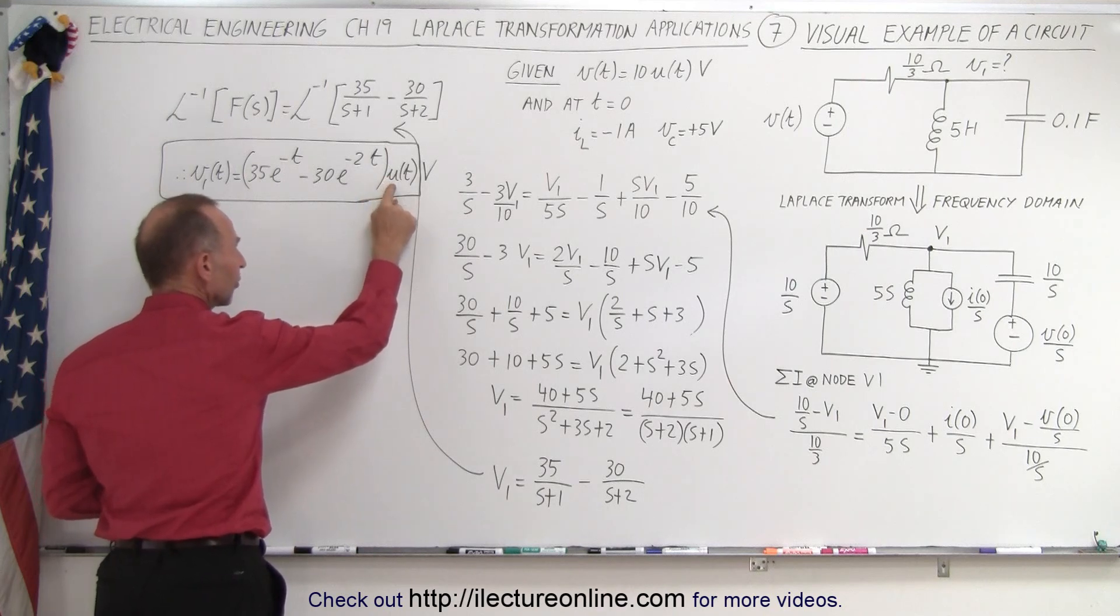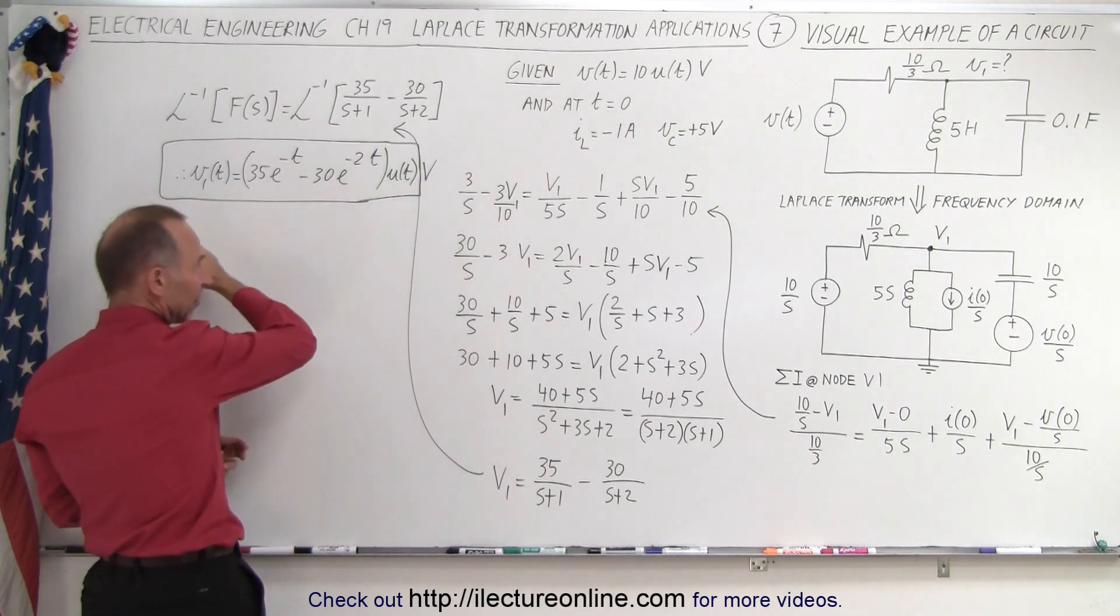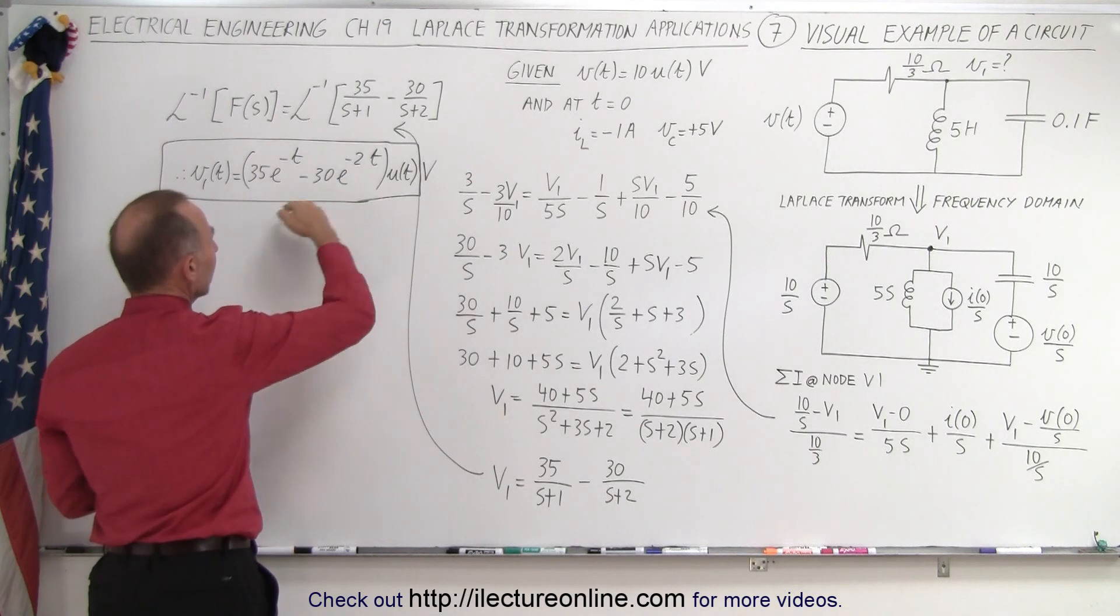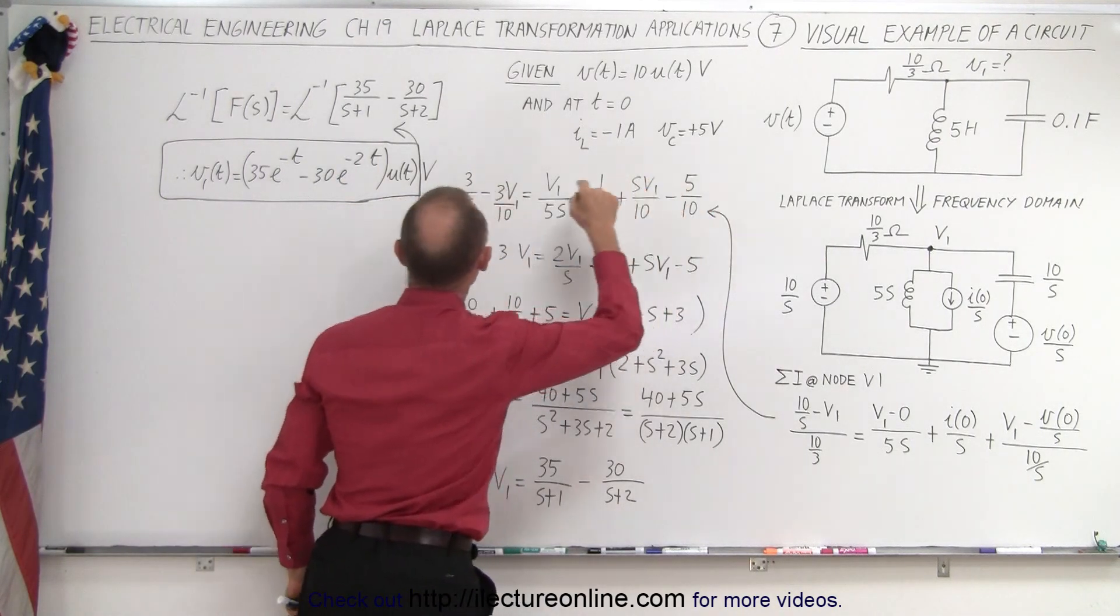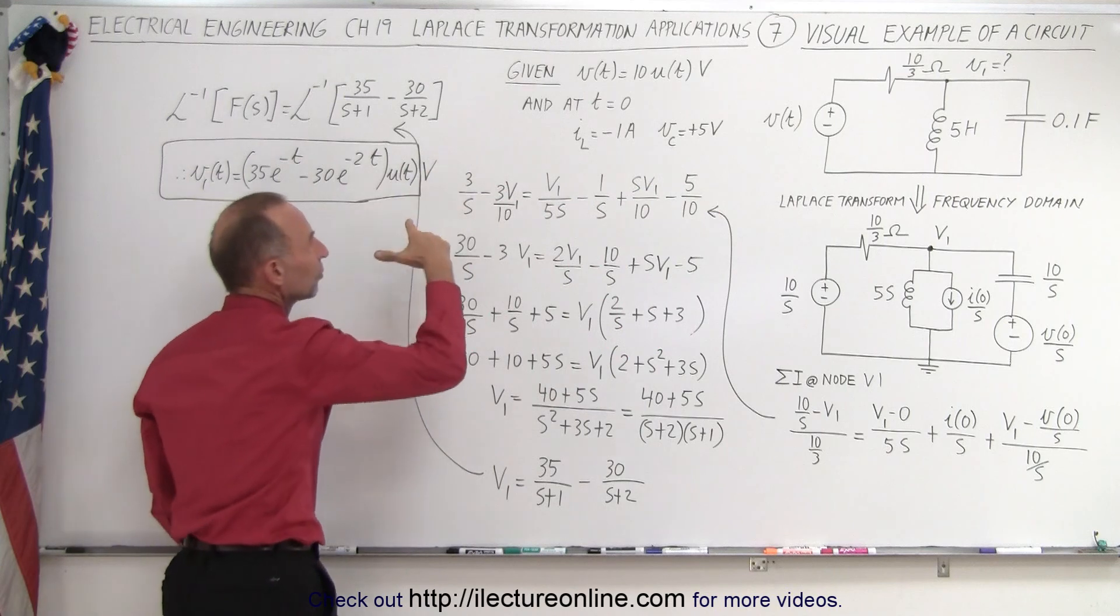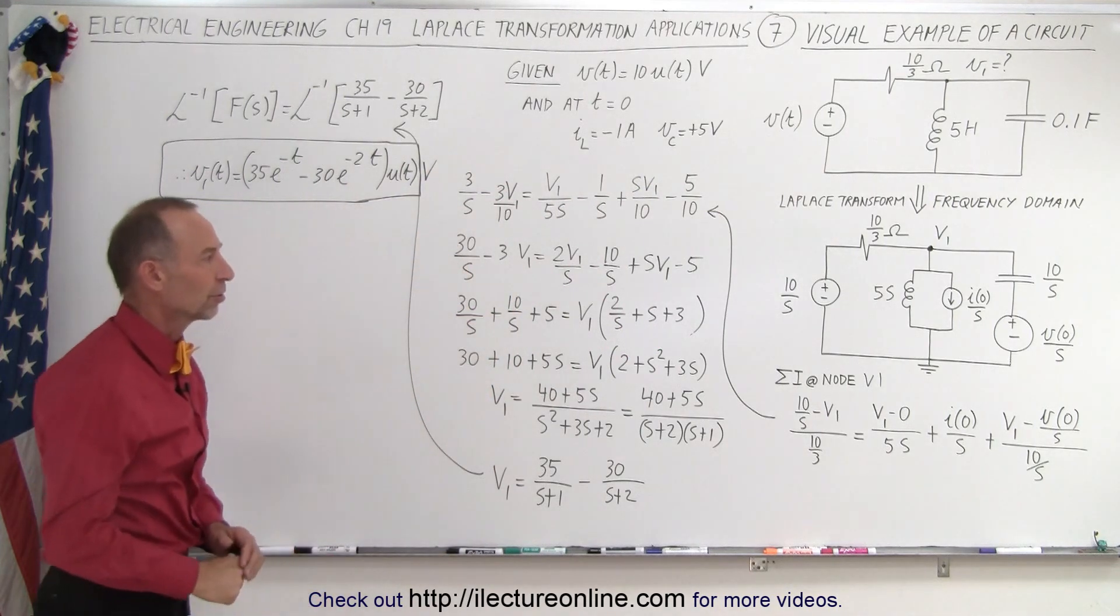This becomes the equation of the voltage as a function of time, times the step function U(t), because before time equals zero there's no voltage. After time equals zero it gets turned on, and the voltage at that node will be equal to this in volts as a function of time.